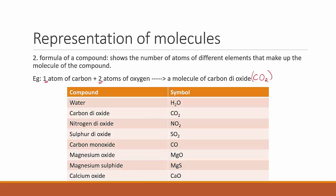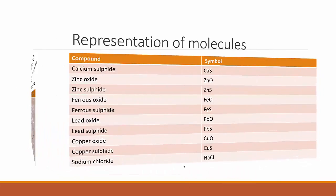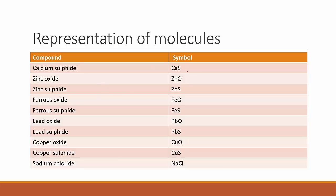Carbon monoxide is CO — 'monoxide' means one single oxygen. Magnesium oxide is MgO — 'oxide' means one oxygen. Magnesium sulfide is MgS. Calcium oxide is CaO. Going over these again: water is H2O, carbon dioxide is CO2, nitrogen dioxide is NO2, sulfur dioxide is SO2, carbon monoxide is CO, magnesium oxide is MgO, magnesium sulfide is MgS, calcium oxide is CaO.